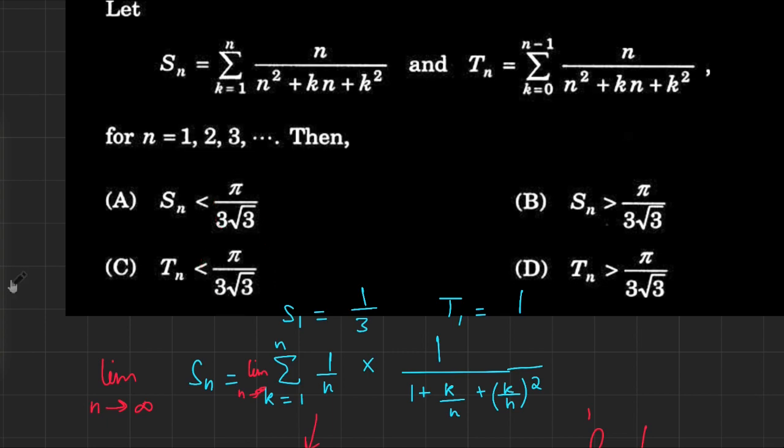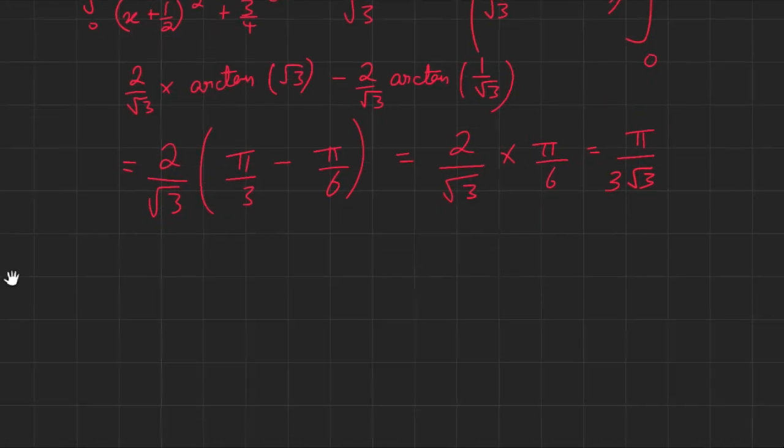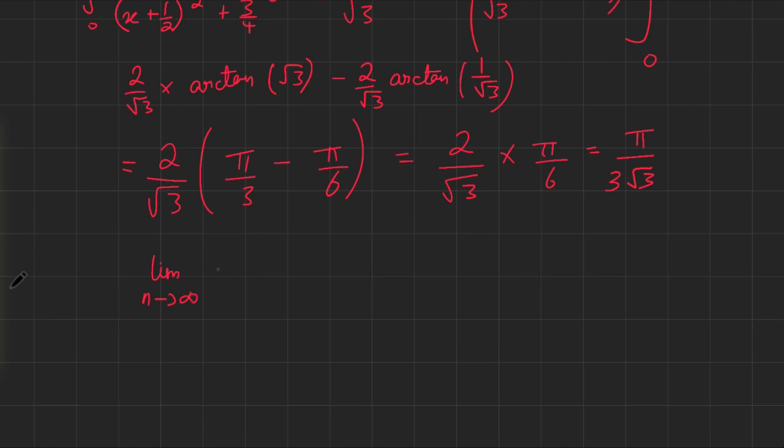So, there is something to do with increasing and decreasing functions. Let's investigate this a bit more. We know that the limit as n goes to infinity of S of n equals also the limit as n goes to infinity of T of n, which is π over 3 root 3.